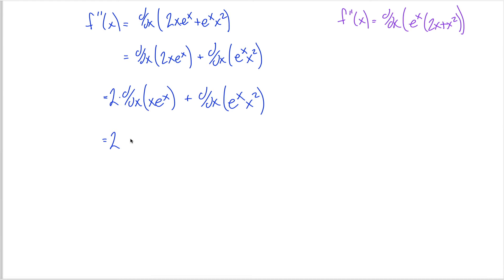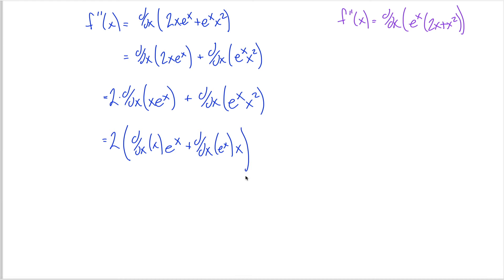I have this 2 times this derivative, but this derivative using the product rule is the derivative of the first thing, the x, times the second thing, the e to the x, plus the derivative of the second thing, the e to the x, times the first thing, the x. Be careful with these parentheses — this 2 has to get multiplied by this entire derivative. If you don't have these parentheses in here, the 2 will just hit the first term, not the second term.